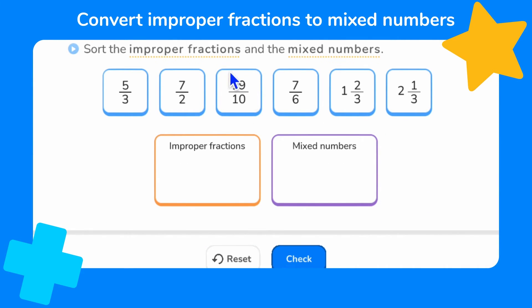We're asked to sort the improper fractions and the mixed numbers. Remember, an improper fraction has a numerator greater than the denominator. So let's take a look. 5 thirds or 5 over 3. This has a numerator greater than the denominator. The top number is greater than the bottom number, so it is an improper fraction.